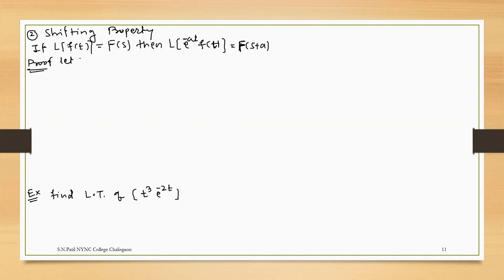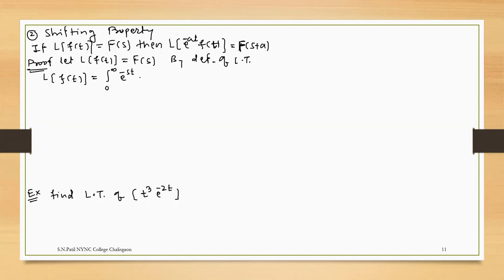Let the Laplace of f(t) be equal to capital F(s). By definition of Laplace transform, the Laplace of f(t) is equal to the integral from 0 to infinity of e raised to minus s·t into f(t) with respect to t, which equals capital F(s). The coefficient of t here is minus s.